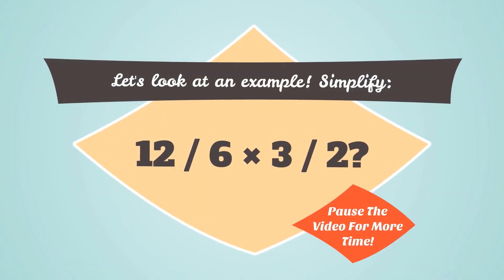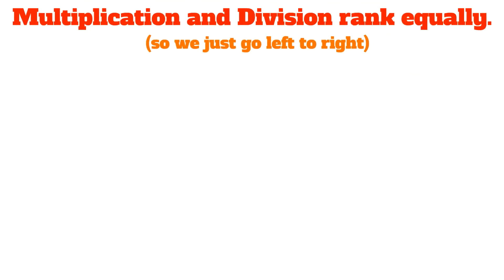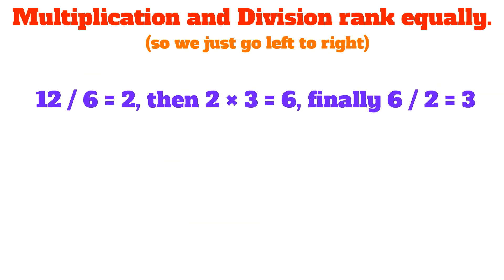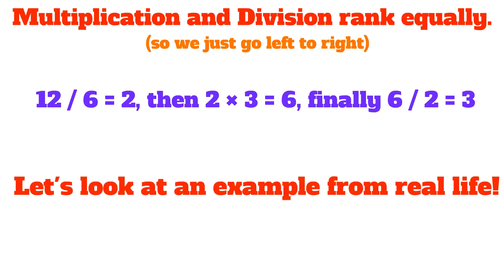Let's look at another example. Simplify 12 divided by 6 times 3 divided by 2. Pause the video for more time on this problem. Multiplication and division rank equally. So we just go from left to right. The first thing is 12 divided by 6, which gives us 2. Then 2 times 3, which is equal to 6. And finally 6 divided by 2 equals 3.